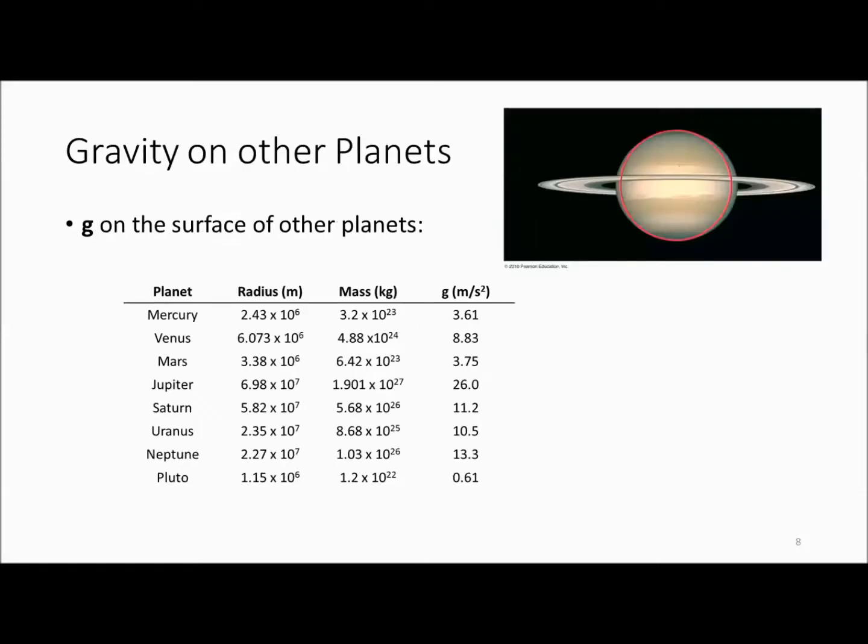The gravitational field on the surface of other planets is going to vary depending on the radius and the mass of the planet. So Mercury is smaller and less massive than the earth, so it has a smaller gravitational field. On the other hand, Jupiter is much larger and much more massive, and it has a much larger gravitational field.